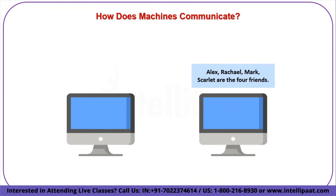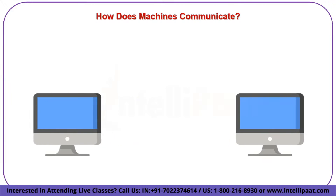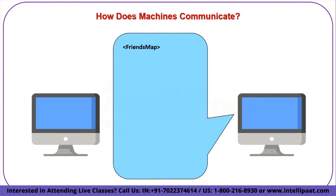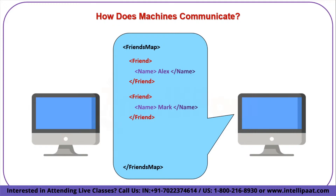Let's say Alex, Rachel, Mark, and Scarlett are those friends, and this machine wants to communicate this data with another machine. First, this machine will construct a tag named 'friends map' and an end tag with slash mark — that is slash friends map. Then inside the tag, we will create a tag named 'friend' and also an ending tag with a slash mark. Inside this tag, we will create a name tag where we will store the name of the friend. Similarly, all other records of the three remaining friends will be inserted into the list. Now this file is completely processable by the machine. The data formulated here is well-formatted and structured, and this is what is termed as valid XML.